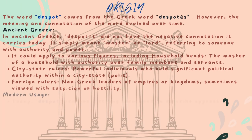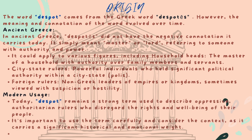The word despot comes from the Greek word despotes. However, the meaning and connotation of the word evolved over time. In ancient Greece, despotes did not have the negative connotation it carries today. It simply meant master or lord, referring to someone with authority and power.